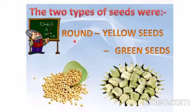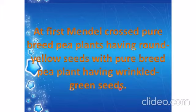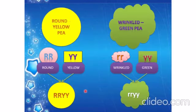The two types of seeds were round and yellow, and wrinkled and green. Mendel crossed pure-breed pea plants having round and yellow seeds with pure-breed plants having wrinkled and green seeds.